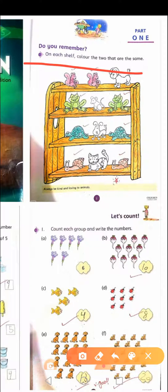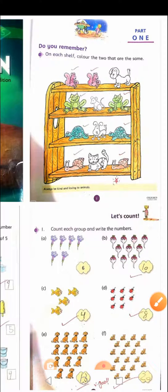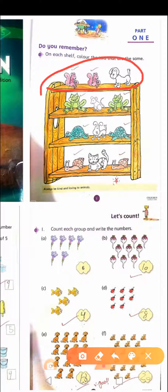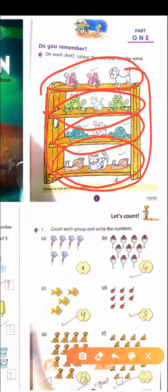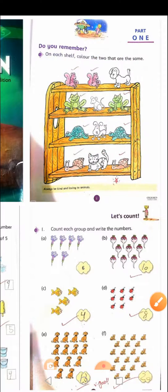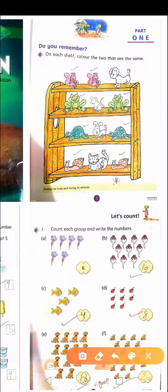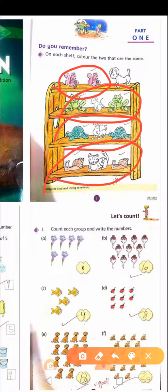On each shelf, color the two that are the same. Ask the children to look at the pictures one by one and color the animals which are the same. My daughter has already colored them: here are rabbits, these are frogs, these are turtles, and these are snails. Give a hint to the child and they will do it themselves.